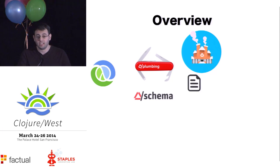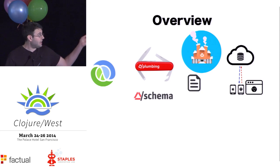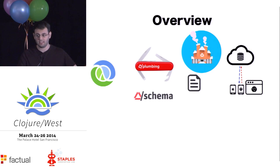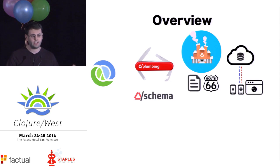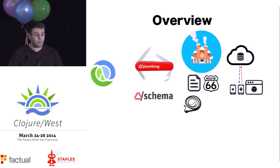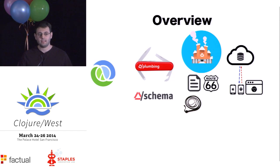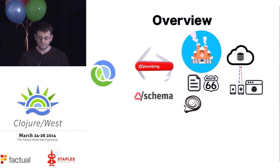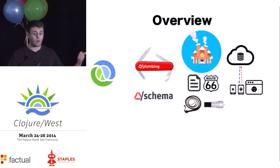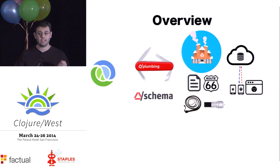We're going to be talking about an application that generates documentation of your API, an application that allows you to spin up a web service using these annotated handlers. And in order to do that, we have this small routing library that routes requests to the appropriate handler. The next two applications are ring middleware — a special schema coercion ring middleware that coerces requests into the appropriate form and responses into an appropriate form. And the last application is Coax, which is a library that can read the handler info and generate client code.